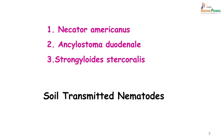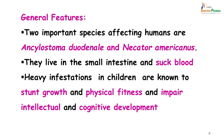All three of these worms are basically soil-transmitted nematodes. The two important species which affect humans are Ankylostoma duodenale and Necator americanus. They live in the small intestine and suck the host's blood. Heavy infestation in children is known to stunt their growth, reduce physical fitness, and impair intellectual and cognitive development.